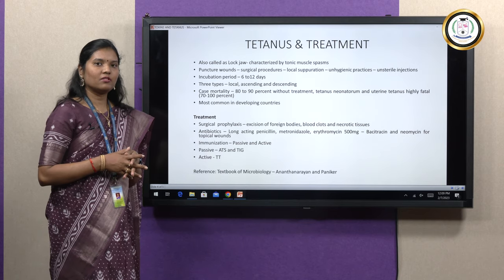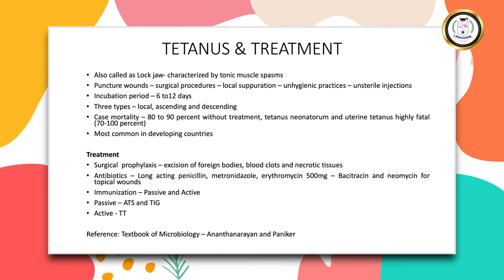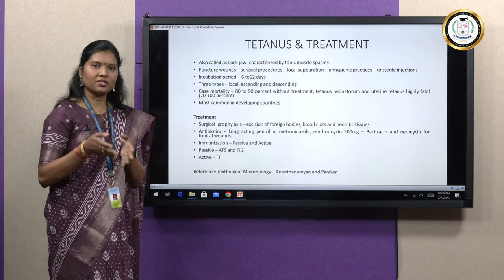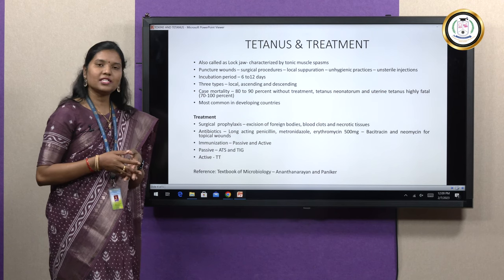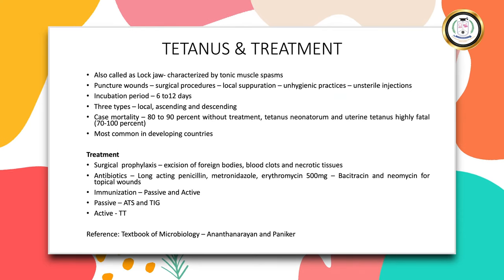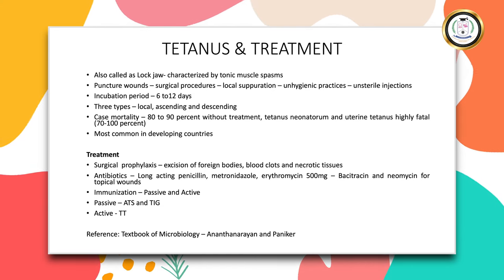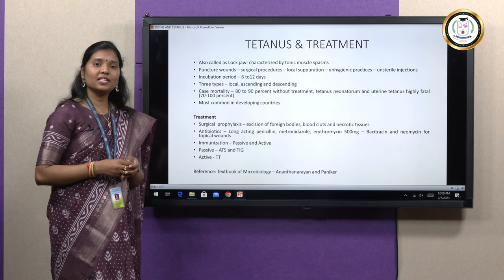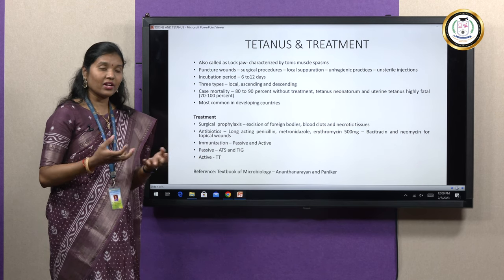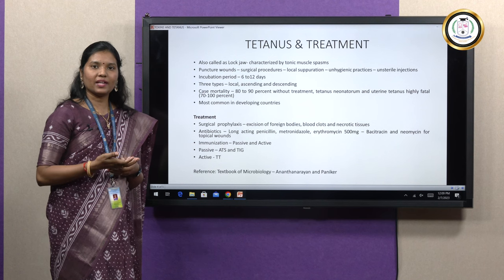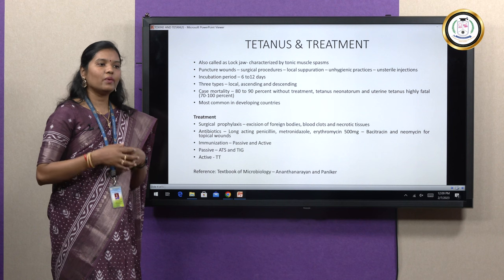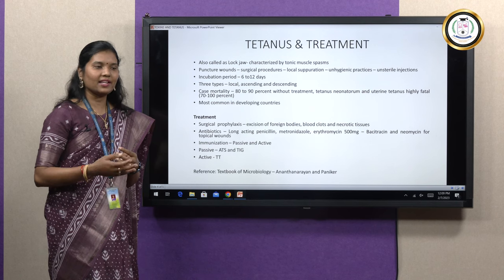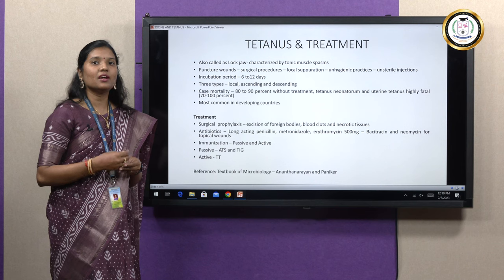The case mortality of tetanus is around 80 to 90 percent when there is no proper treatment. Even with proper treatment, the case mortality is 15 to 50 percent. Tetanus neonatorum — tetanus in newborns — and uterine tetanus have particularly high case mortality of up to 70 to 100 percent. Tetanus is often seen in developing countries where the climate is warm, the soil is very fertile, cultivation is common, humans and animals live in close association, unhygienic practices are followed, and medical facilities are poor.